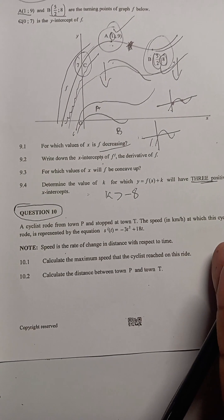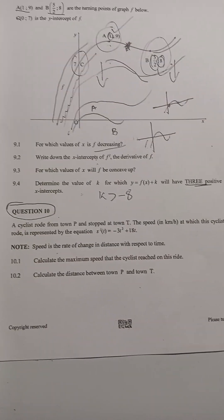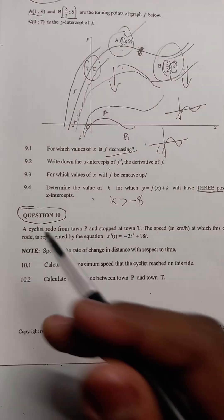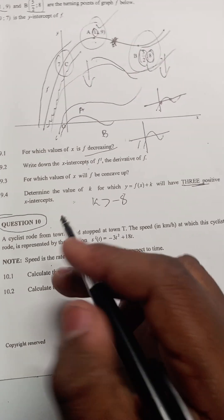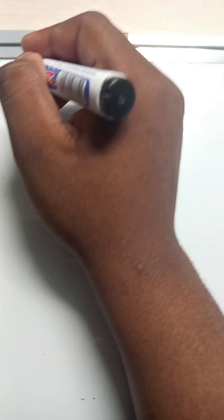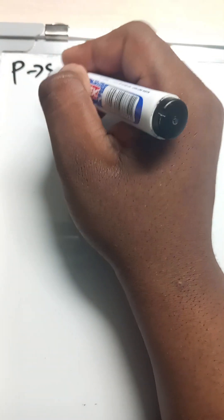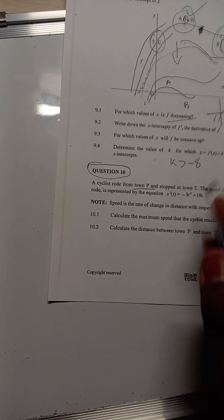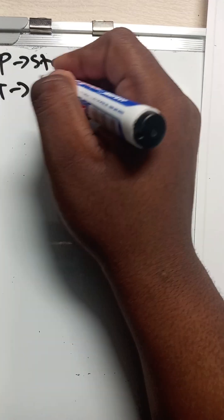Maths Paper 1, question 10 - this is an optimization problem about a cyclist on a road from town P. Be careful - let's underline that. The person started at town P, so at P I can say 'start', and stopped at T, which is the finish. That is very important.